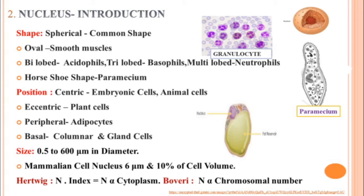Regarding position in the cell, the nucleus is mostly centric — at the center of the cell — as seen in cleavage embryonic cells. Most animal cells show a centric nucleus. But in plant cells, due to the presence of vacuoles, it may be eccentric. In adipocytes it may be peripheral. In columnar and gland cells, it is sometimes very near to the plasma membrane, so it is in a basal position.